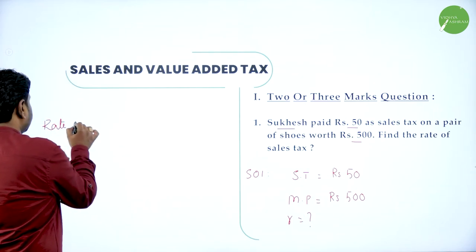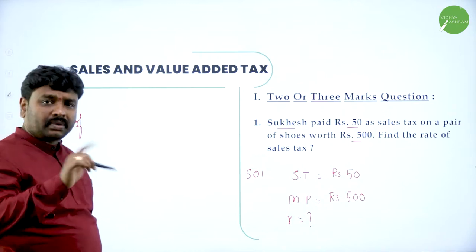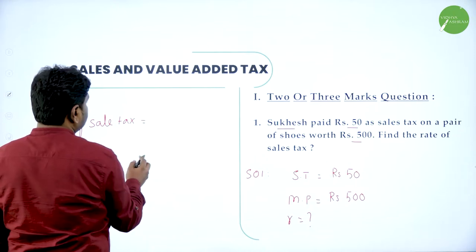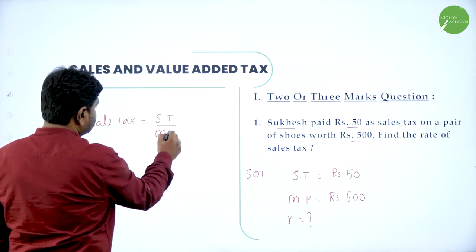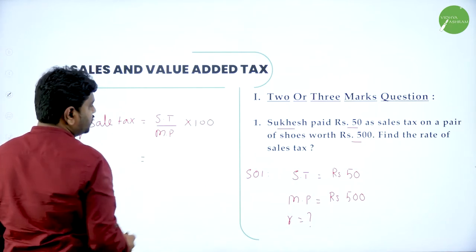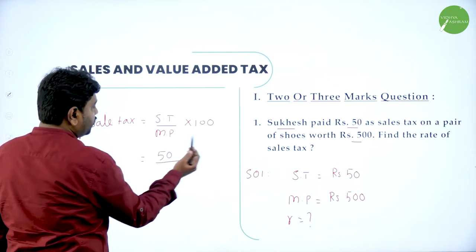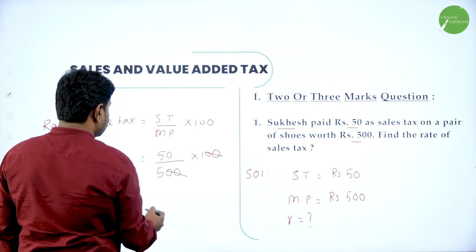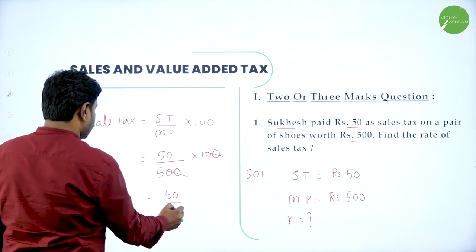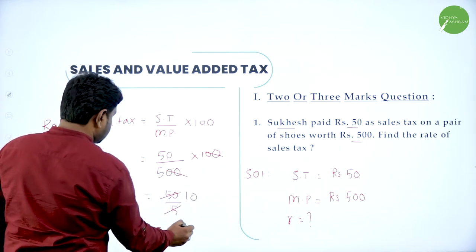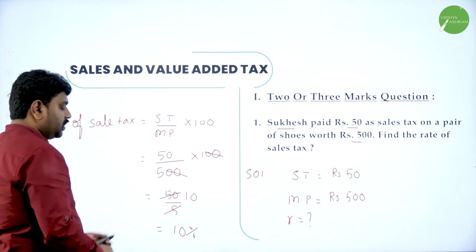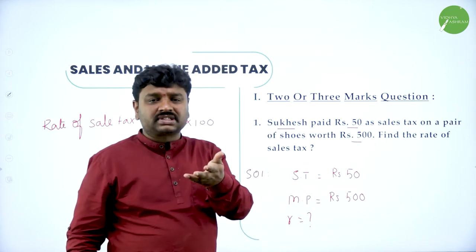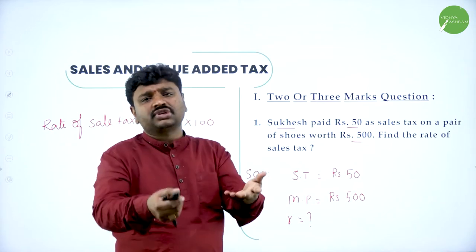Rate of sale tax equals sale tax divided by market price into 100. Sale tax is 50 rupees; market price is 500 rupees. So: 50 divided by 500 into 100. Cancel two zeros — we're left with 50 by 5. That gives 10%. So the rate of sale tax is 10%.